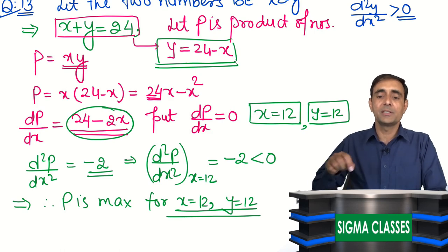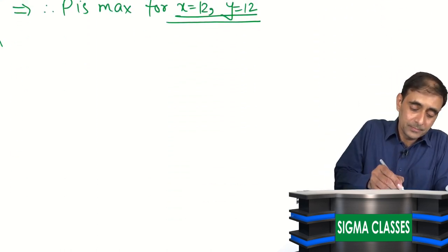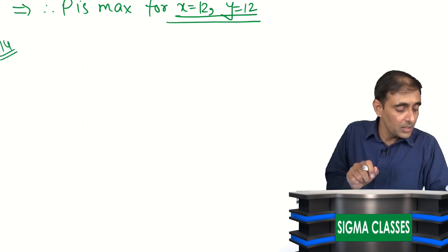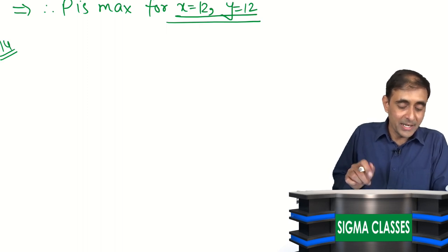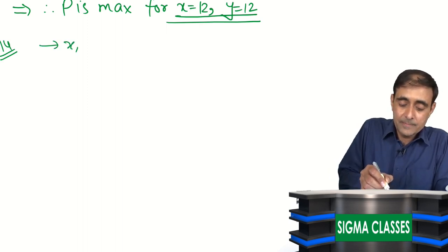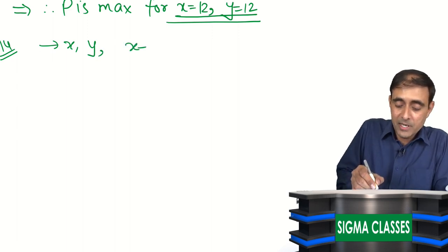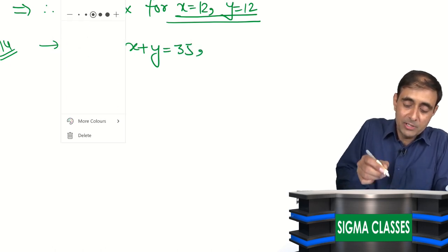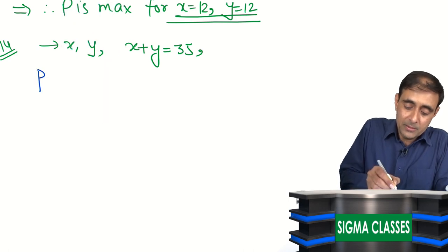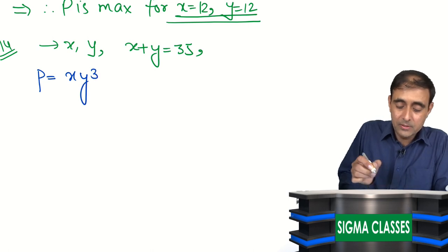A similar type of question is question number 14. Find two positive numbers x and y whose sum is 60 — wait, their sum is 35 — and whose product P = x·y³ is maximum. We have x + y = 35, so x = 35 - y, giving P = (35 - y)·y³ = 35y³ - y⁴.